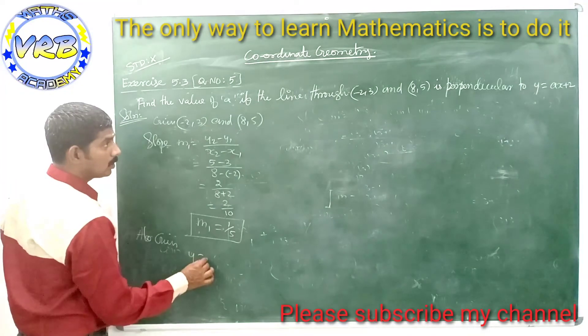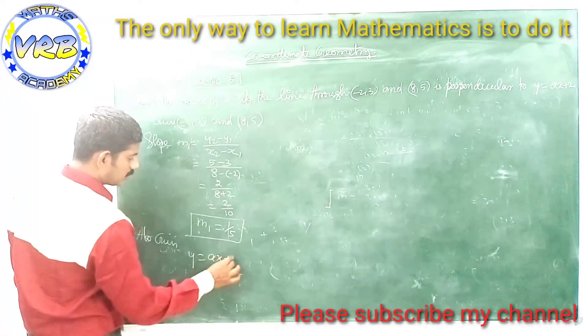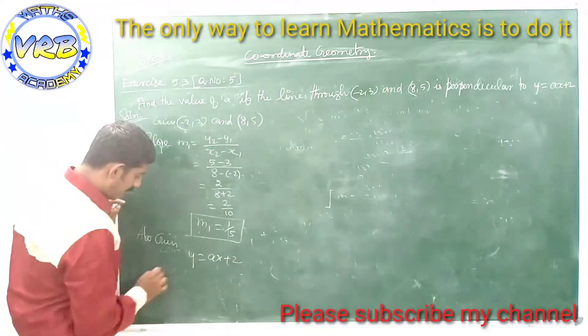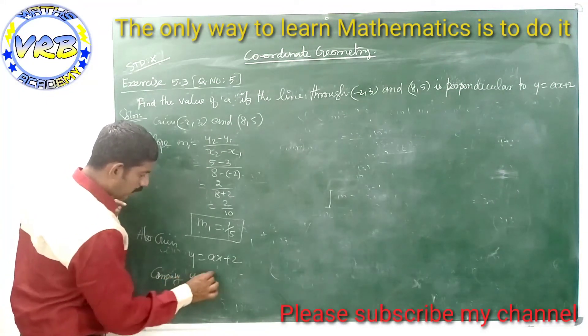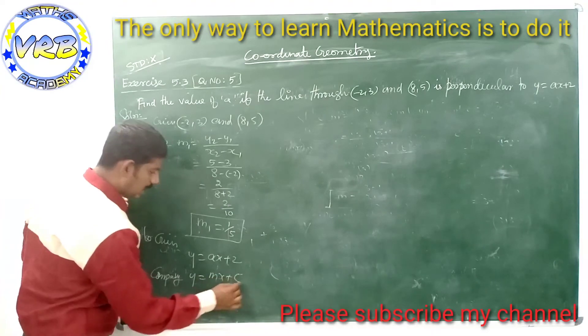The second line is y = ax + 2. Comparing this equation with the standard form y = mx + c, we can identify the slope m2.